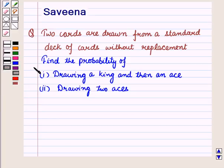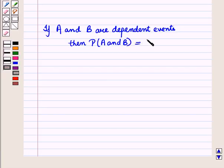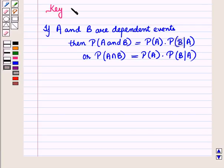Before starting with the solution of this question, we should know our key result. If A and B are dependent events, then the probability of event A and B is equal to the probability of event A into the conditional probability of occurrence of event B given that event A occurs. We can also write it as: P(A ∩ B) = P(A) · P(B|A). This result will be the key idea for solving the given question.